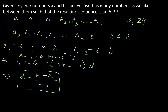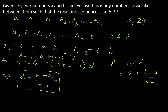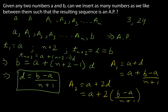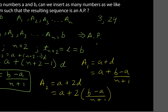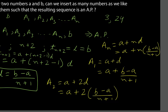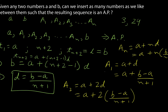We know the common difference d and the first term a, so we know the entire AP. The second term is a1 = a + d = a + (b−a)/(n+1). Similarly, a2 = a + 2d = a + 2(b−a)/(n+1). In general, an = a + n·d = a + n(b−a)/(n+1). This covers the general case for inserting n numbers between a and b.